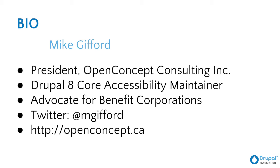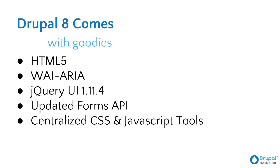So first of all, Drupal 7 was pretty good — it is still the most accessible CMS out there. The WordPress folks are referring to Drupal's accessibility and trying to emulate that, and they're coming along pretty quickly. But they've got a long ways to go because of the work that's been done on Drupal 7. Drupal 8 is going to be even better than Drupal 7. There's a bunch of stuff built into Drupal 8 that we couldn't accomplish in Drupal 7, and that brings really large benefits for anyone implementing a Drupal website.